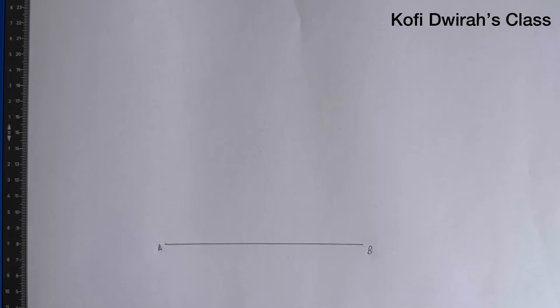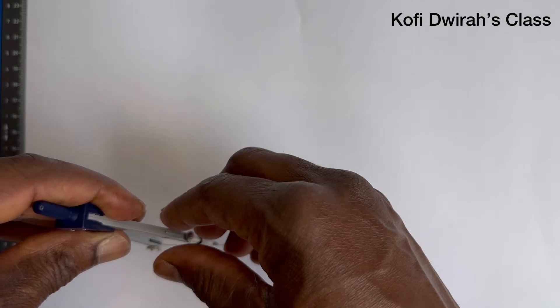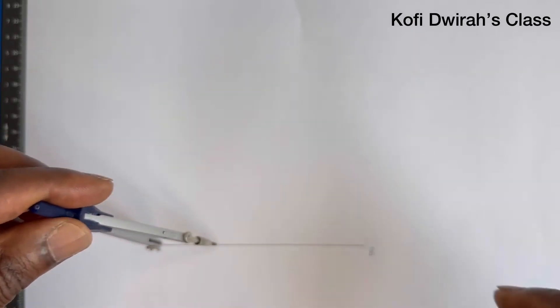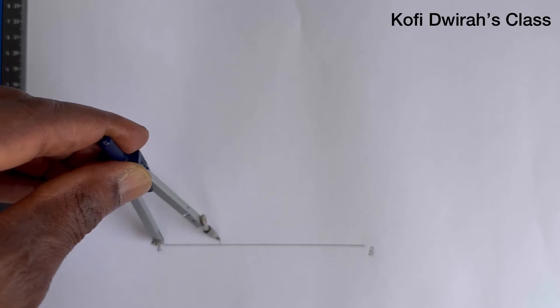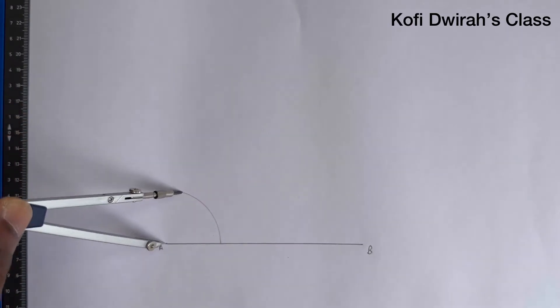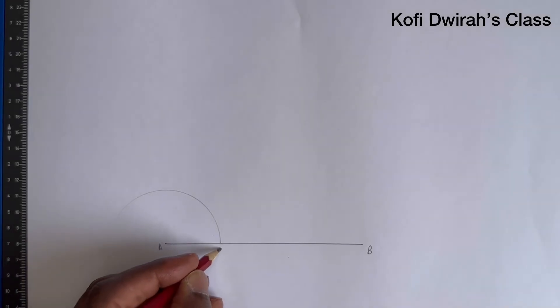So we have to construct 45 degrees from point A. At point A, you open your compass to any radius, then you draw an arc. Here we have this point to be point C.